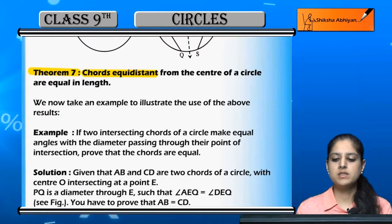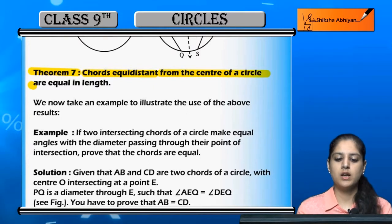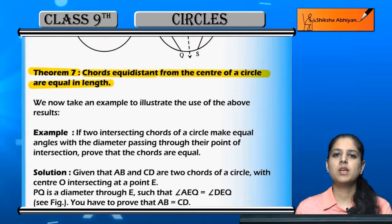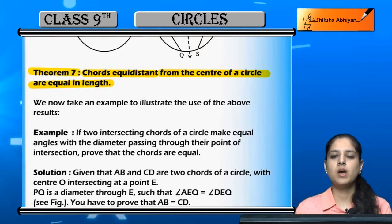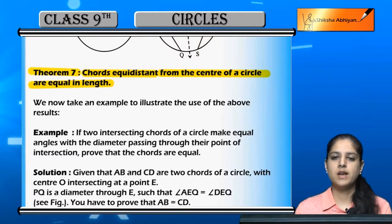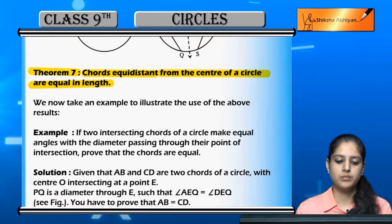Chords equidistant from the center of a circle are equal in length. We just saw that equal chords are equidistant from the center. Now, the converse: if chords have equal distance from the center, then those chords are equal.